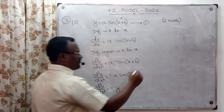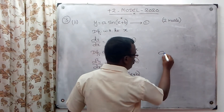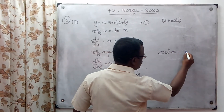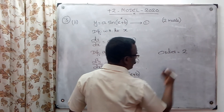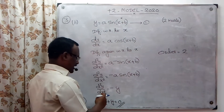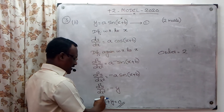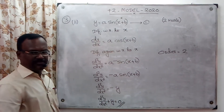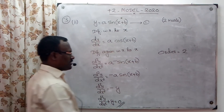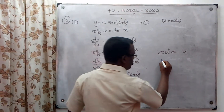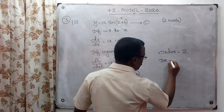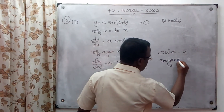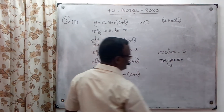The differential equation is of order 2, because d²y/dx² is the highest order derivative present. The order is 2 and the degree is 1.